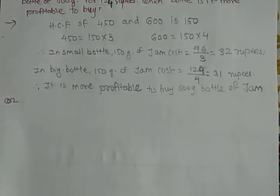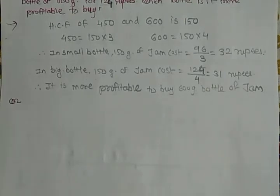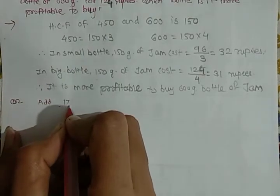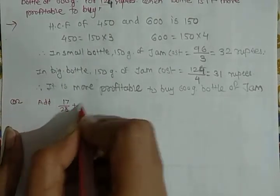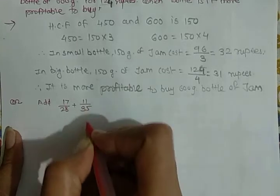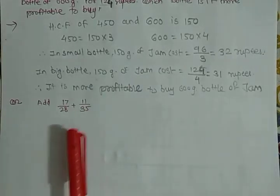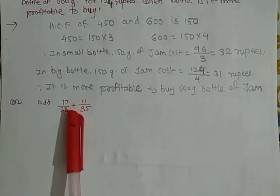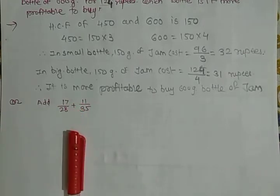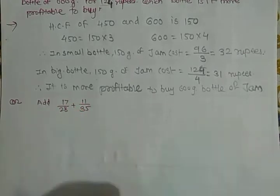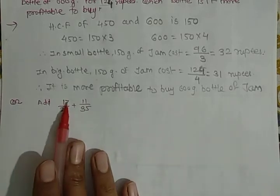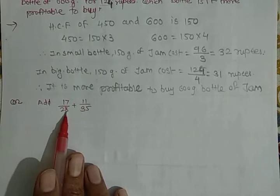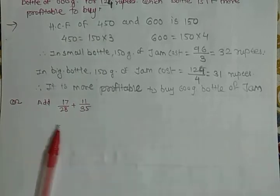Let's see question number 2. If you want to find the fraction 17 upon 28 plus 11 upon 35, you know the addition of fractions. Here you use cross multiplication: 17 multiply by 35 plus 11 multiply by 28, divided by 28 multiply by 35.